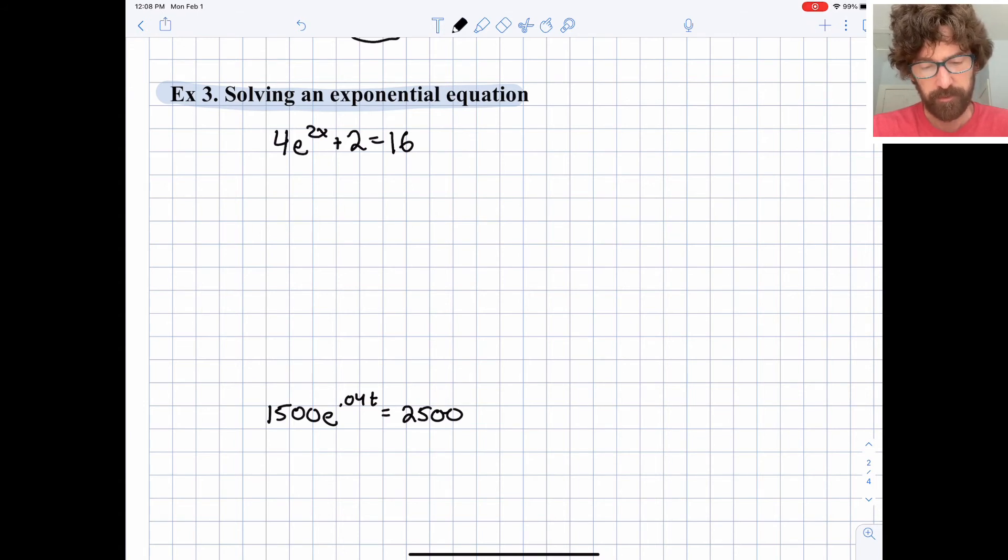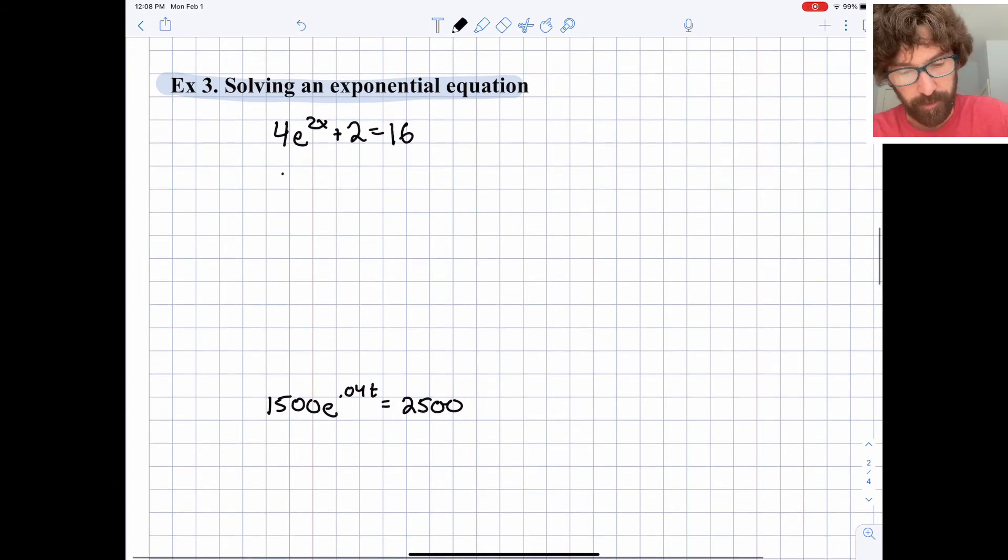So for this first one we have e to the 2x, 4 times e to the 2x plus 2 is 16. Let's gradually remove things or do the inverse of operations on the left side to gradually dig in towards our x and see if we can solve for x. I'm going to subtract 2 first and then I'm going to divide by 4 as well.